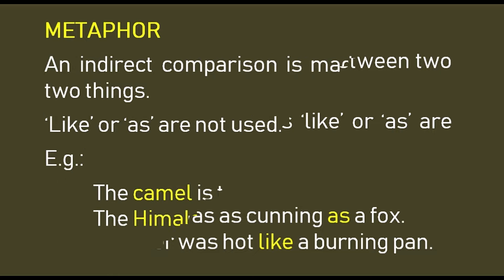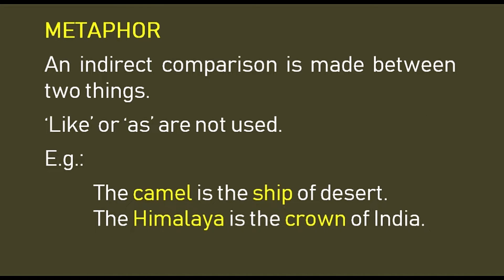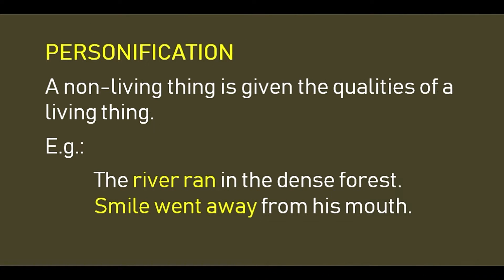Metaphor: an indirect comparison is made between two things without using the conjunctions 'like' and 'as'. For example, 'the camel is the ship of the desert' and 'the Himalaya is the crown of India.' The camel is compared to the ship and the Himalaya is compared to a crown.